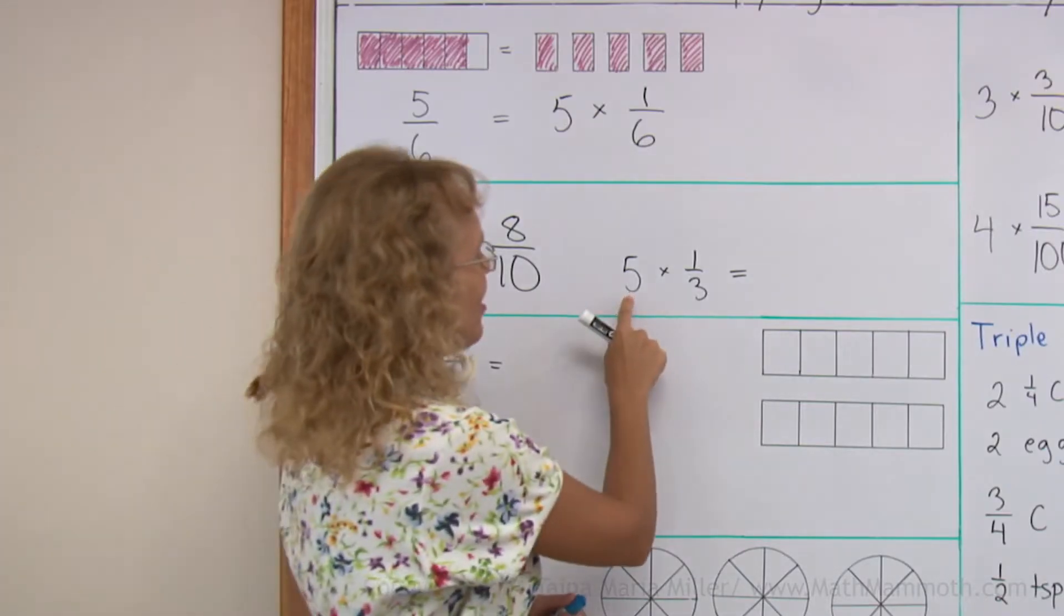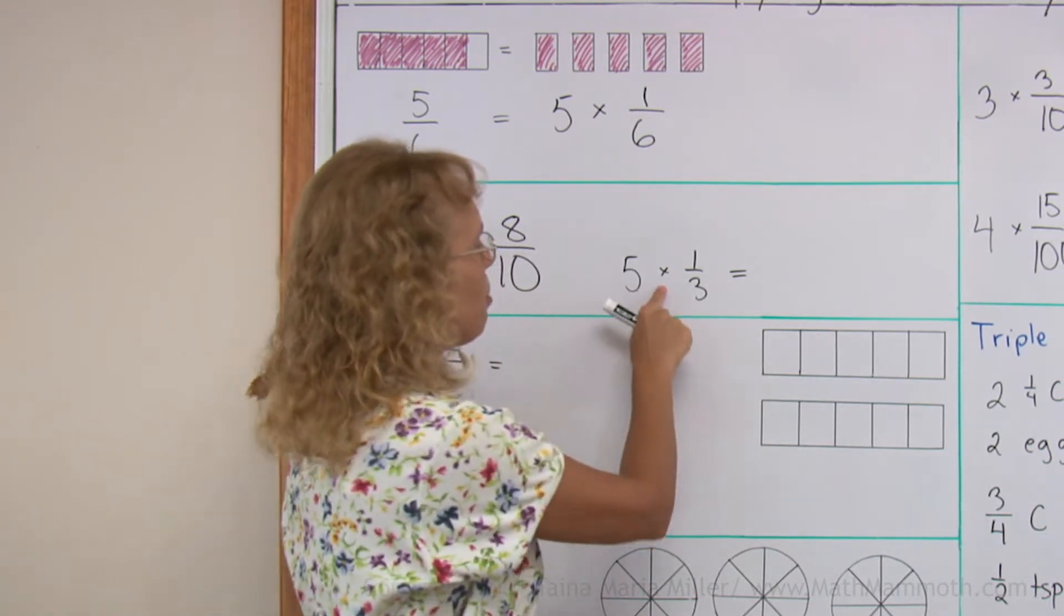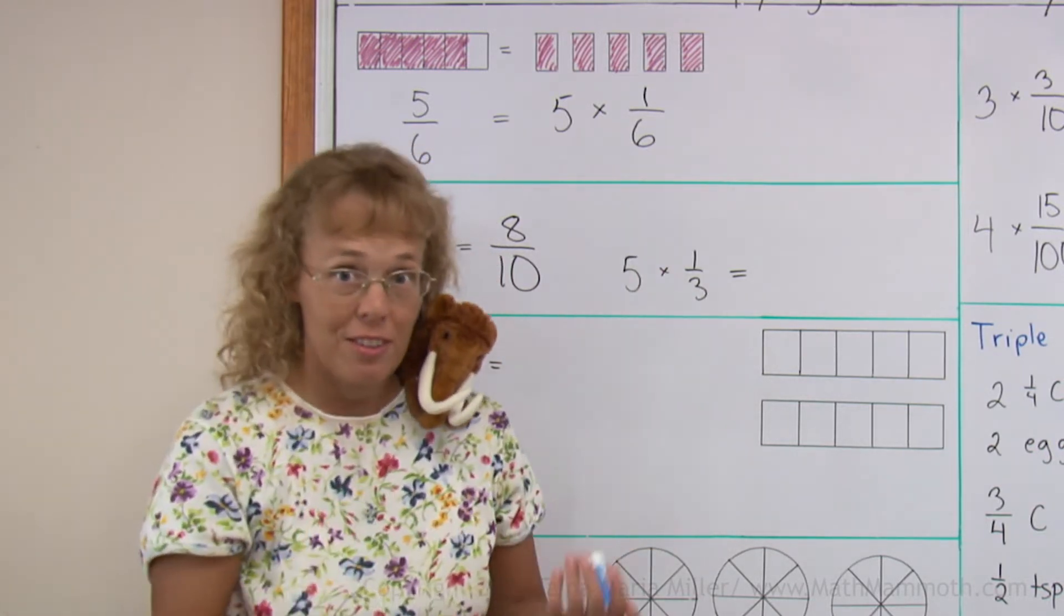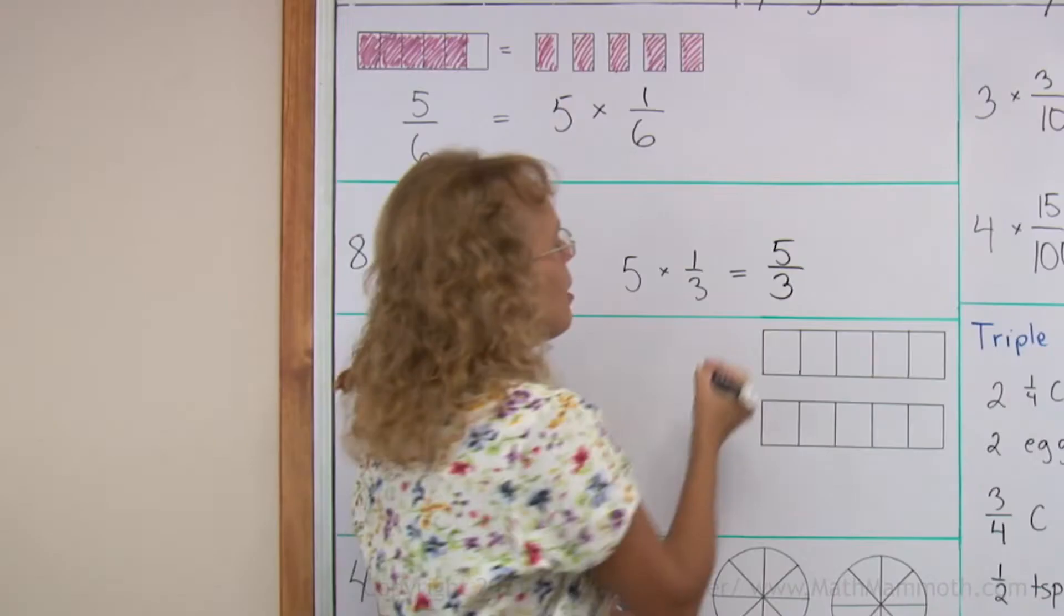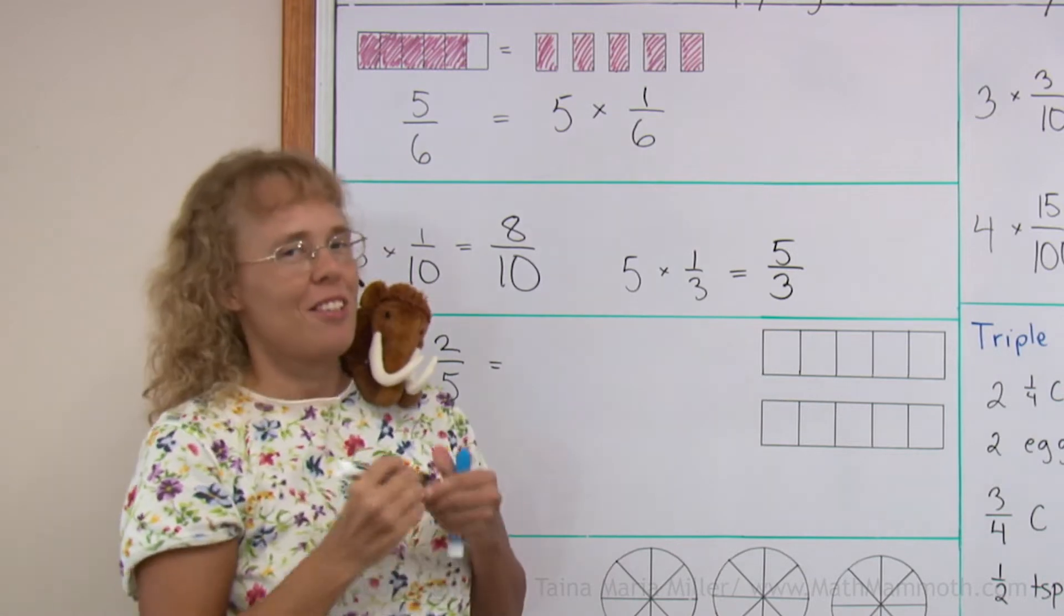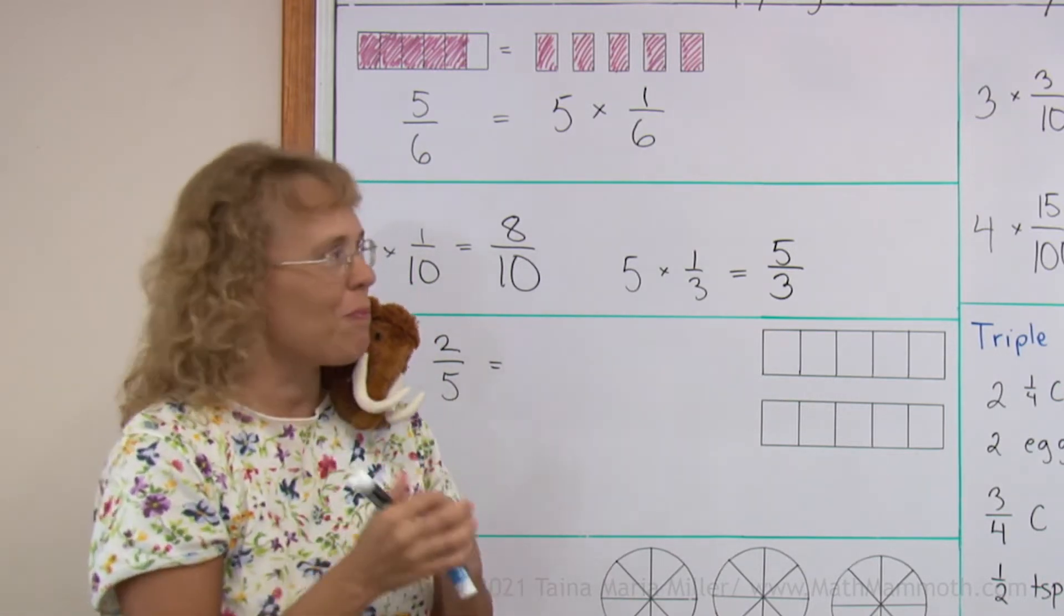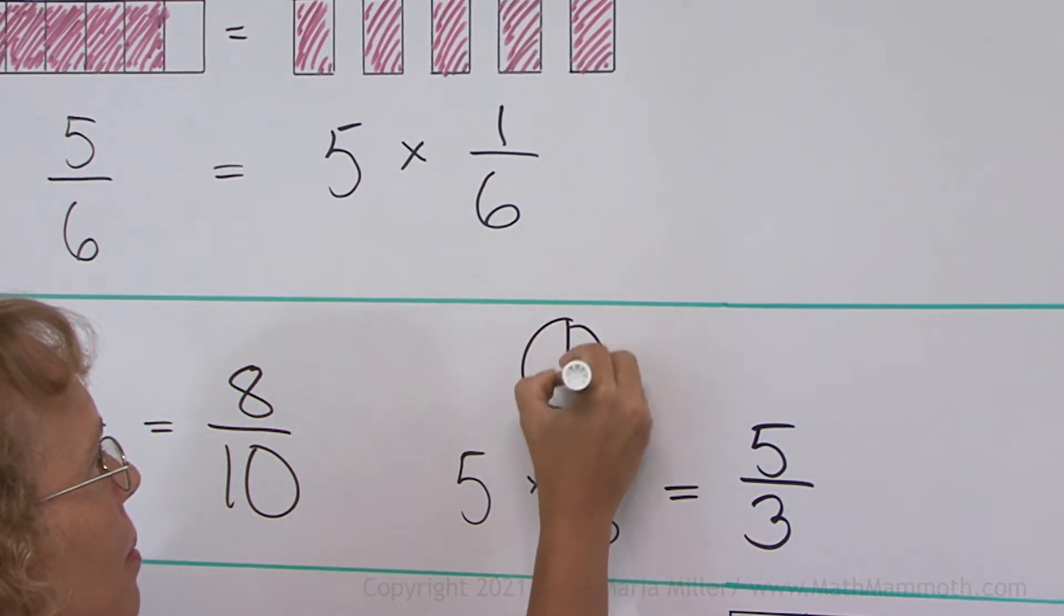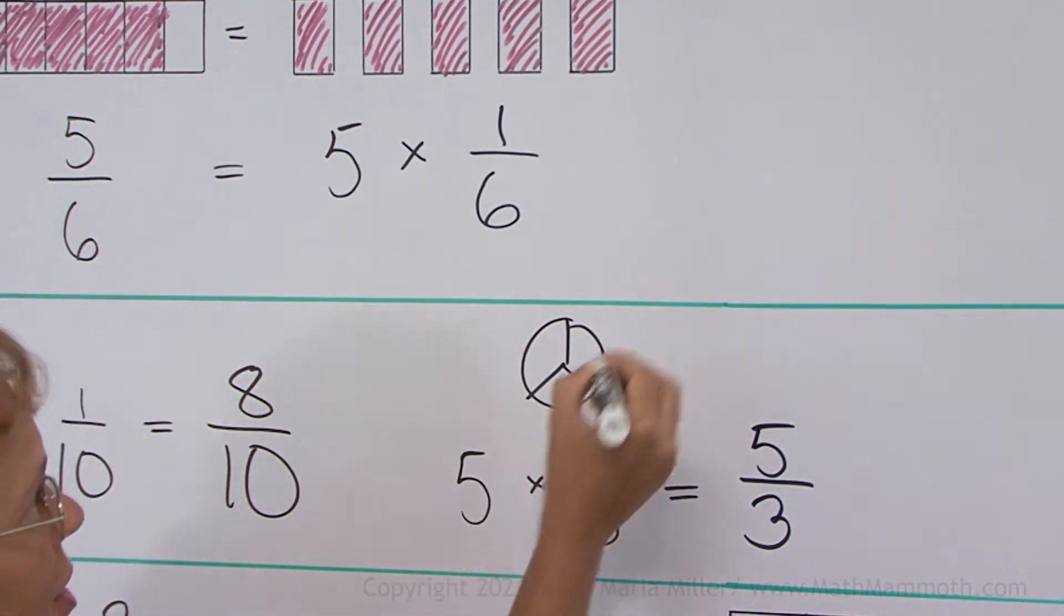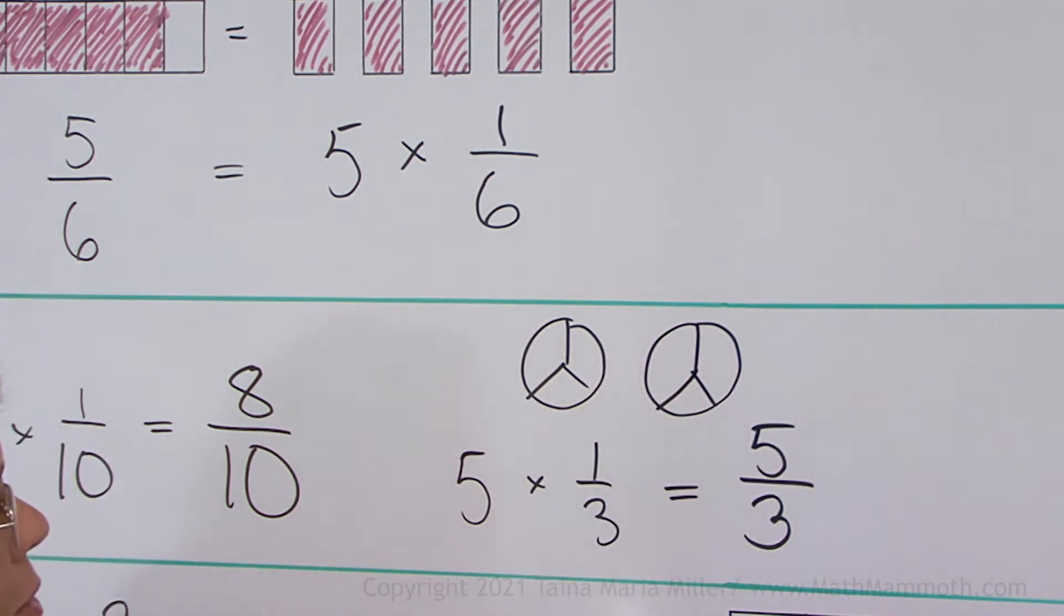Now how about here? 5 times 1 third. 5 copies of 1 third is 5 thirds, yes. But now 5 thirds makes more than 1 pie, makes more than 1 whole, right? If you have 5 thirds, here you would have 3 thirds. And then from here you would take the 4th and 5th.